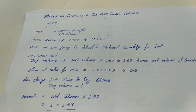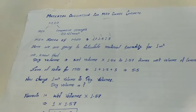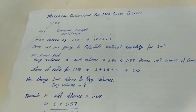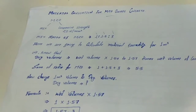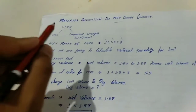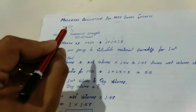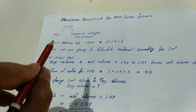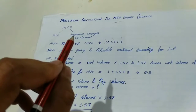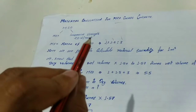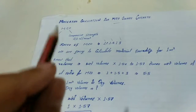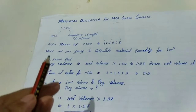Let's start. Here the grade of concrete is M20. M stands for mix and 20 is the compressive strength of concrete after 28 days, which is 20 Newton per mm square.